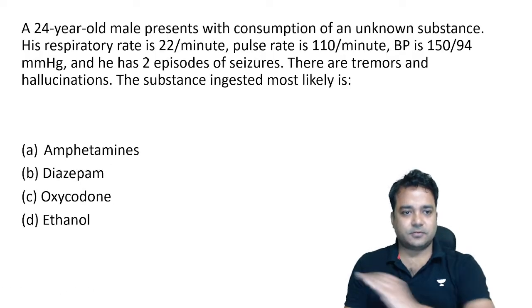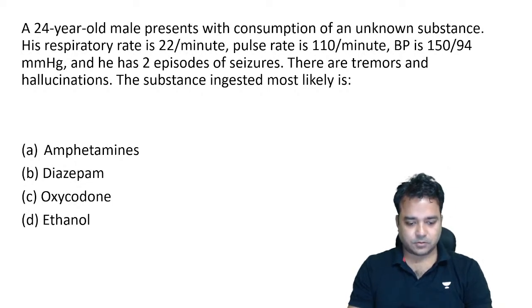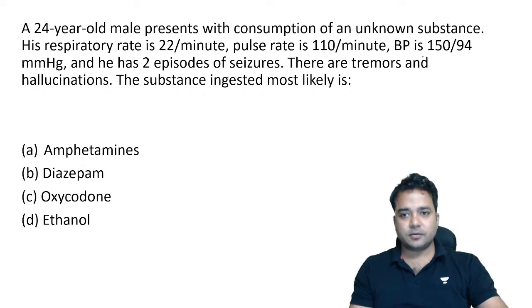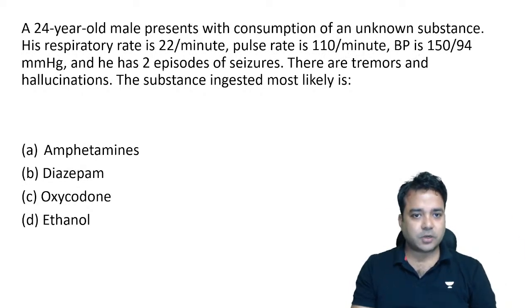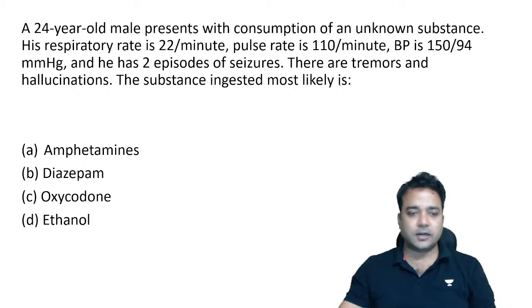We'll be solving certain previous year questions and certain mixed questions. First of all, try to answer this question. A 25-year-old male presents with consumption of an unknown substance. His respiratory rate is high, pulse rate is 110 (also high), blood pressure is also raised, and he has two episodes of seizures, tremors, and hallucinations. The substance ingested most likely — let us try to rule out the options.